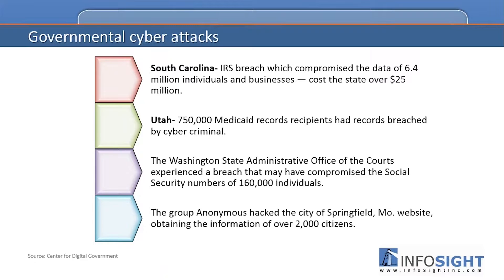Before we get into the detail, I wanted to go over some of the recent losses and breaches that have taken place from a state standpoint. If you notice on this screen, there are a couple of different states — South Carolina and Utah, also the Washington State Administrative Office — where you can see there have been numerous breaches at the state level, some of them very large, and a significant number of records lost. We'll talk through how to protect against this happening.